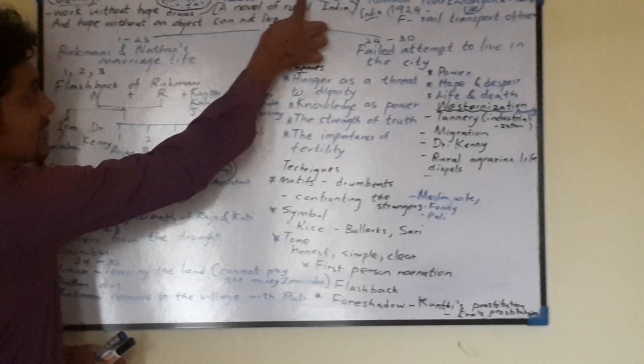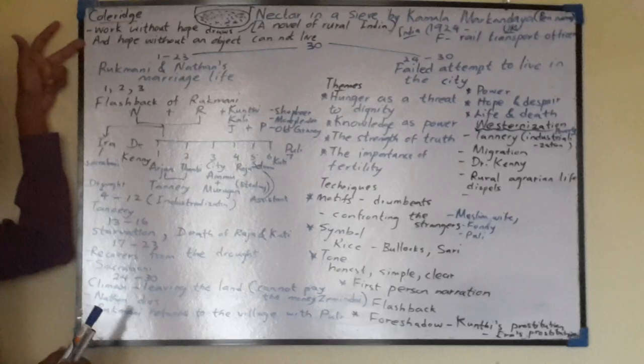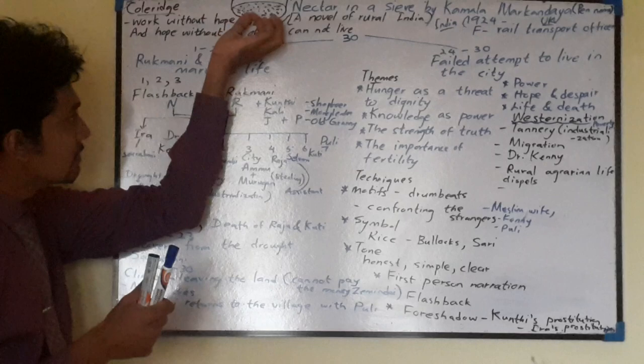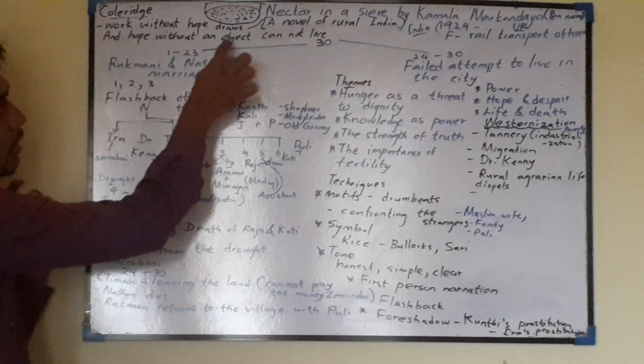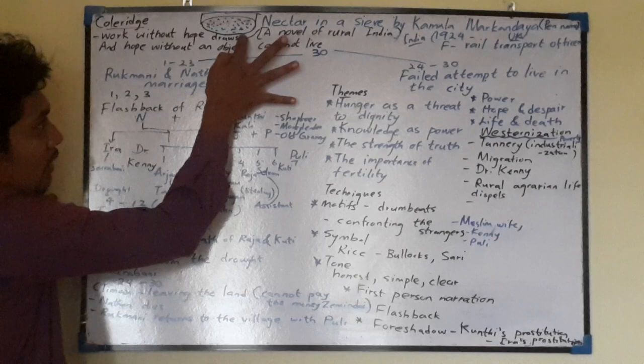When it comes to Nectar in the Sea, the title is very significant because the title is taken from Samuel Taylor Coleridge's Work Without Hope — "Draws nectar in a sieve." In other words, hope without an object cannot live. For example, when you take a sea like this, the sweetness of things we cannot hold from that sea. Therefore, Indian society always consists of misery and tragedies.